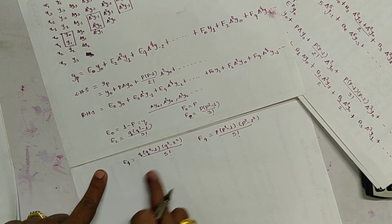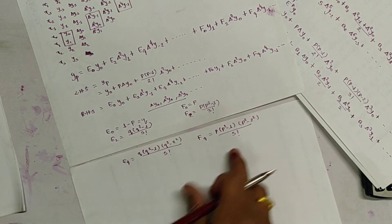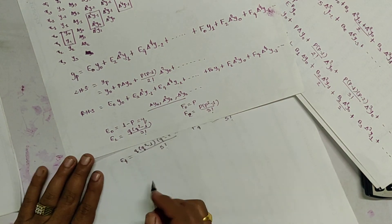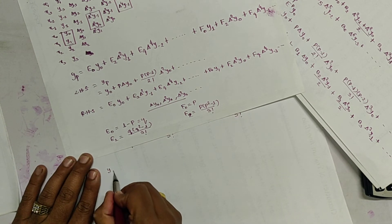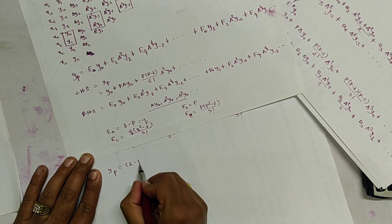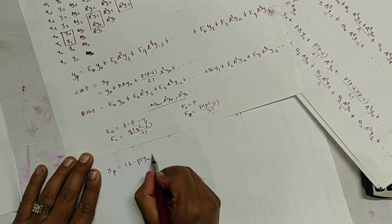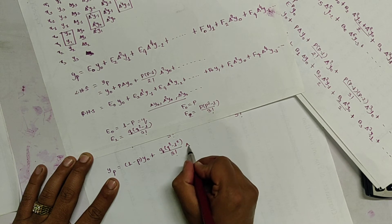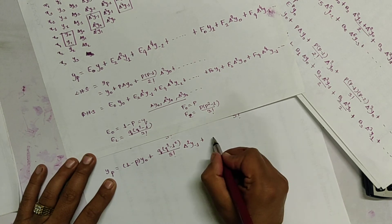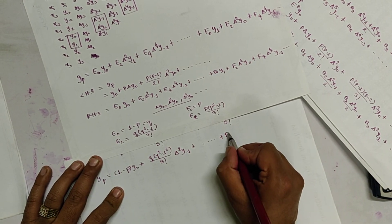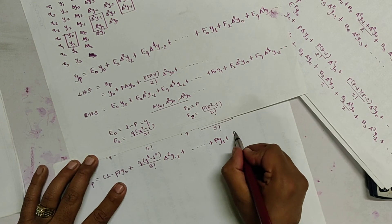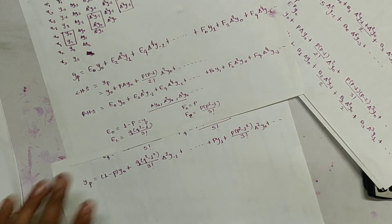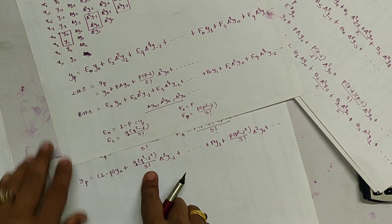By substituting the values of e0, e2, e4, f0, f2, f4 in the polynomial which we have supposed, it gives the relation as: yp equals (1 minus p) y0 plus q(q squared minus 1) over 3-factorial times del-squared y-minus-1 plus dot dot dot plus p y1 plus p(p squared minus 1) over 3-factorial times del-squared y0 plus dot dot dot. This is the required Everett's interpolating polynomial.